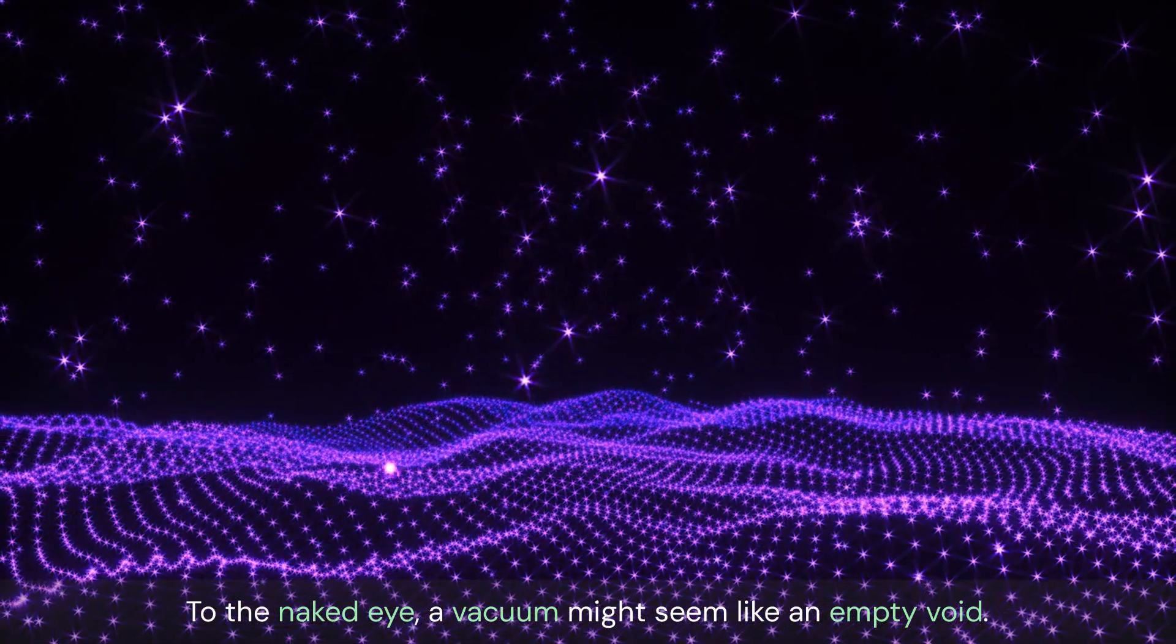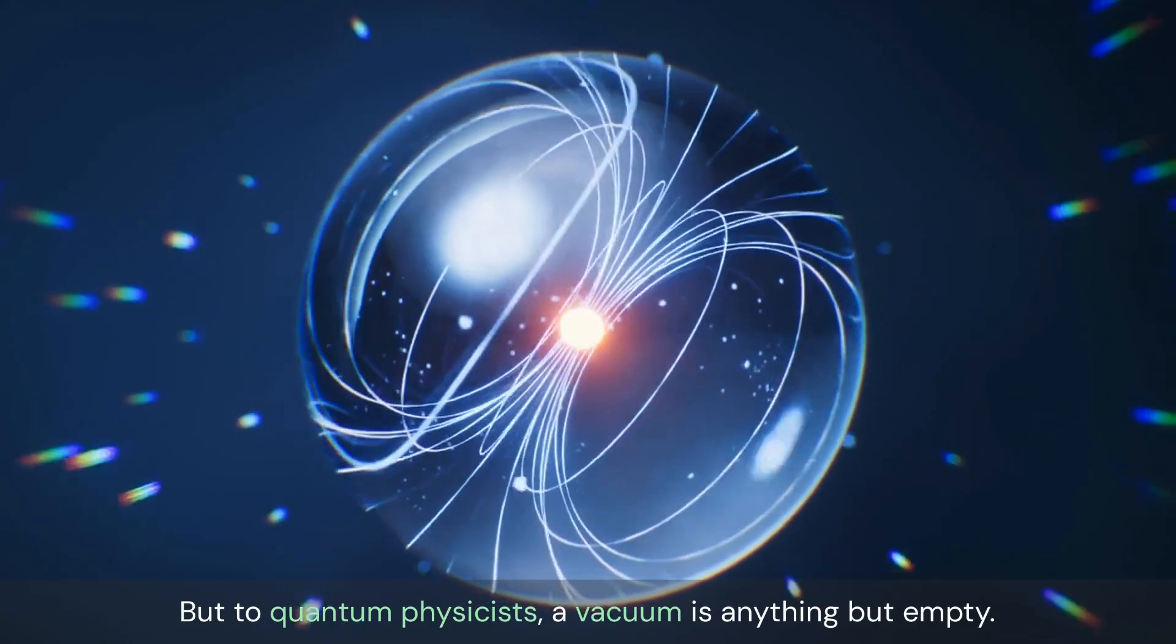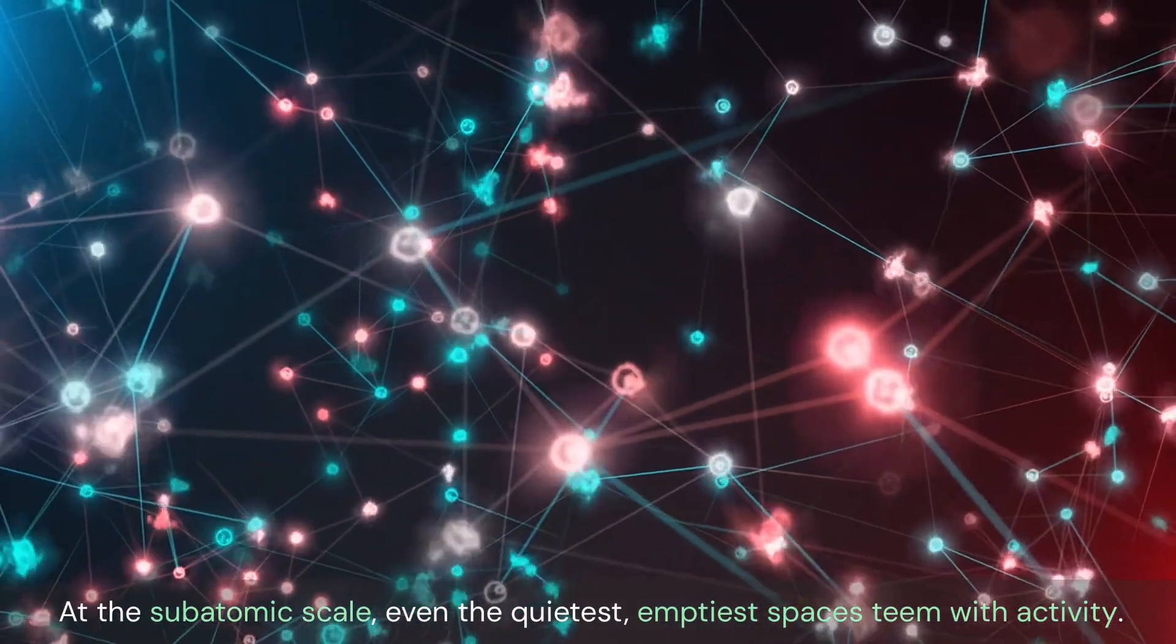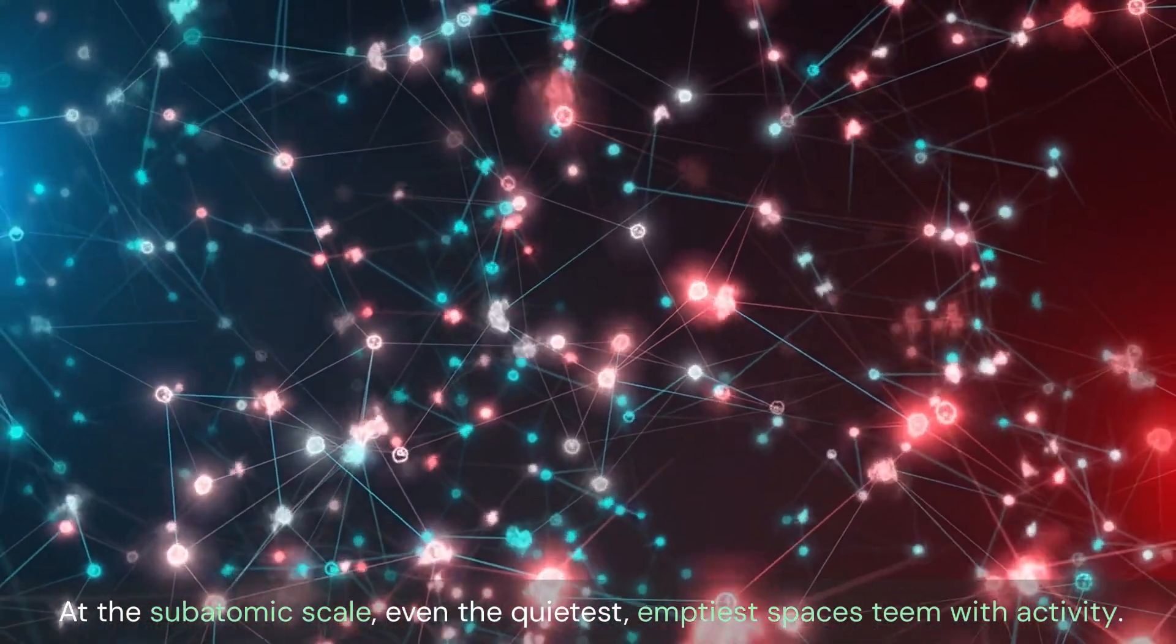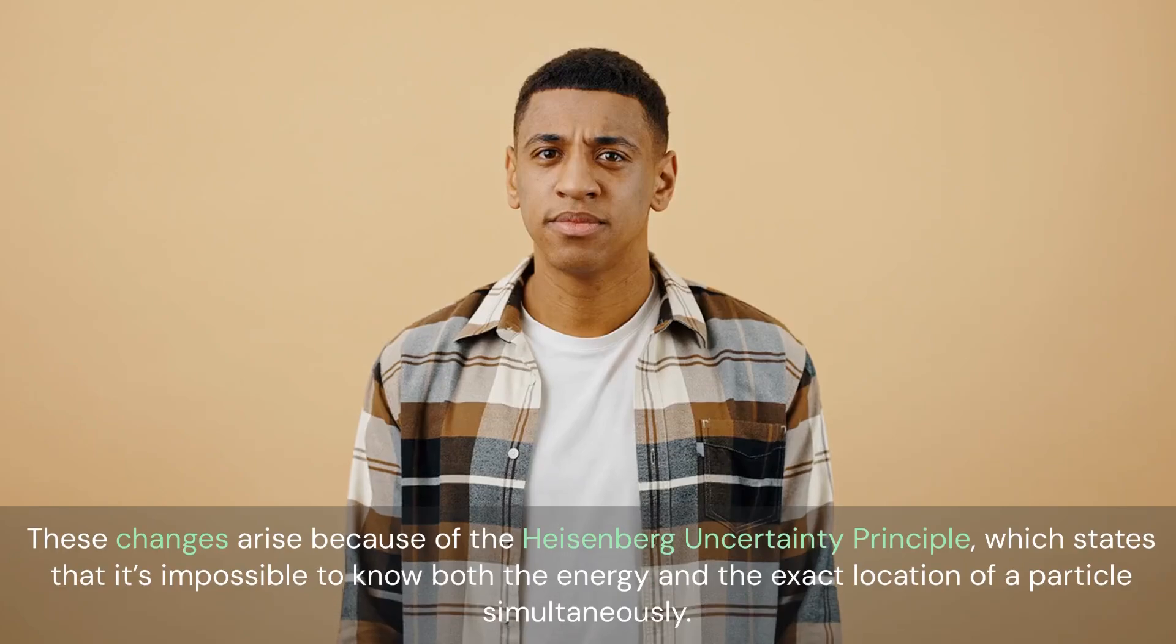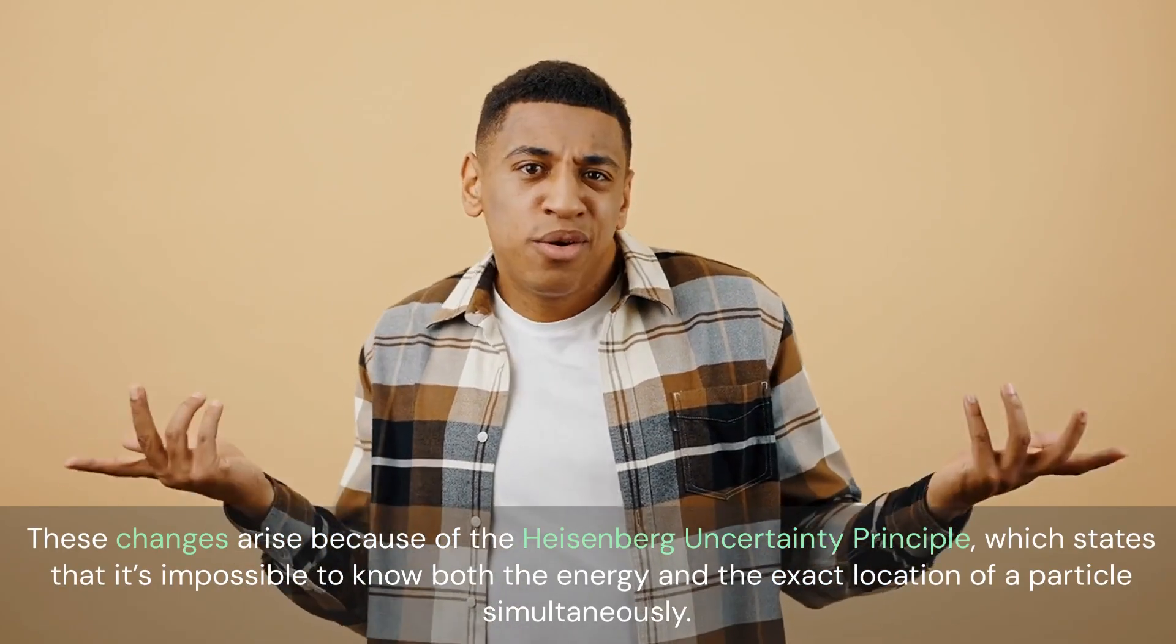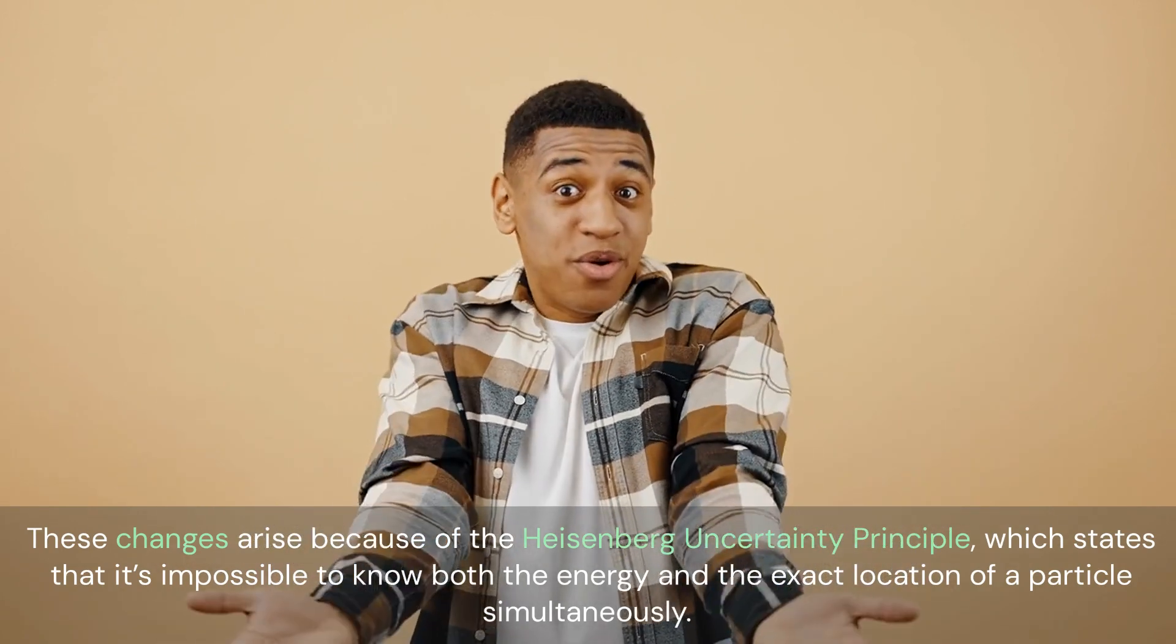To the naked eye, a vacuum might seem like an empty void. But to quantum physicists, a vacuum is anything but empty. At the subatomic scale, even the quietest, emptiest spaces teem with activity. Quantum fluctuations are temporary changes in the amount of energy at a point in space. These changes arise because of the Heisenberg Uncertainty Principle, which states that it's impossible to know both the energy and the exact location of a particle simultaneously.